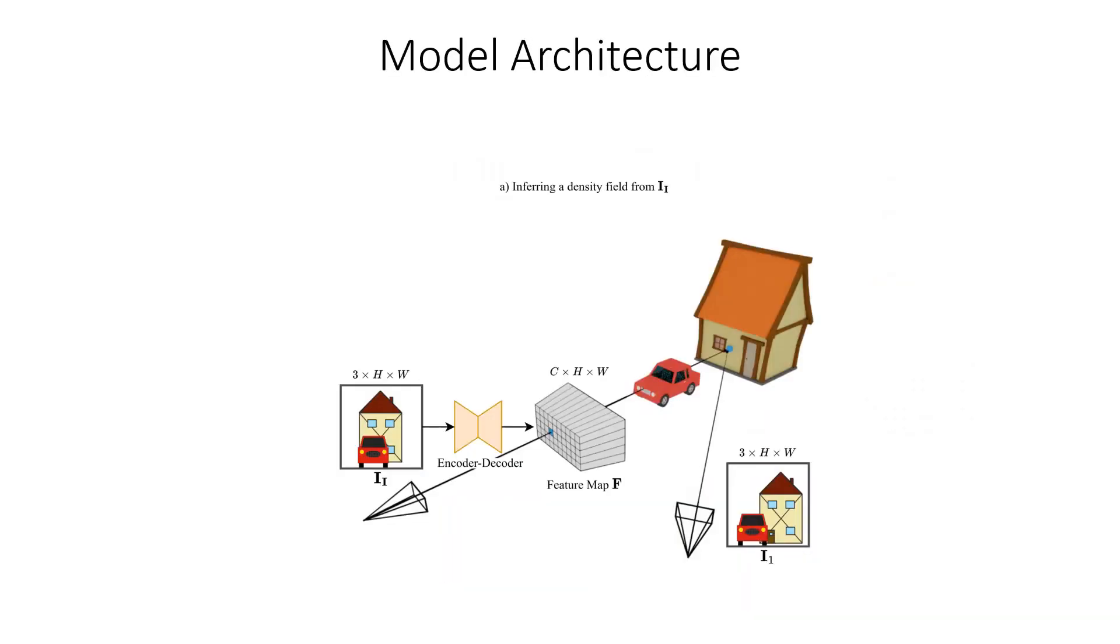The prediction of a density field happens in two steps. First, we predict a pixel-aligned feature map from the input image using a high-capacity encoder-decoder network. Every feature in this feature map implicitly describes the density distribution along the ray through the respective pixel. As shown in the figure, the distribution can model geometry even in occluded regions, for example behind the car. Density along the ray can later be evaluated through a small MLP.